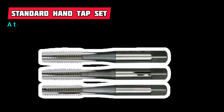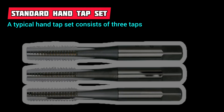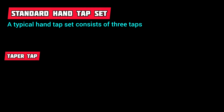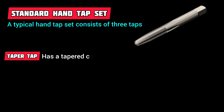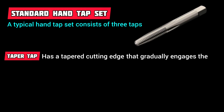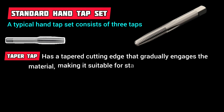A typical hand tap set consists of three taps. The Taper Tap has a tapered cutting edge that gradually engages the material, making it suitable for starting the threading process.